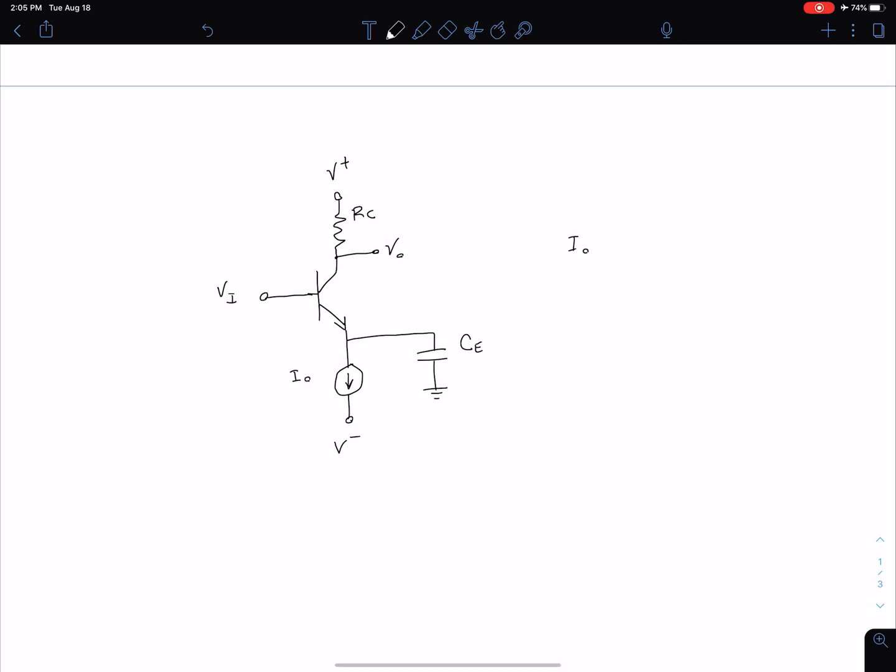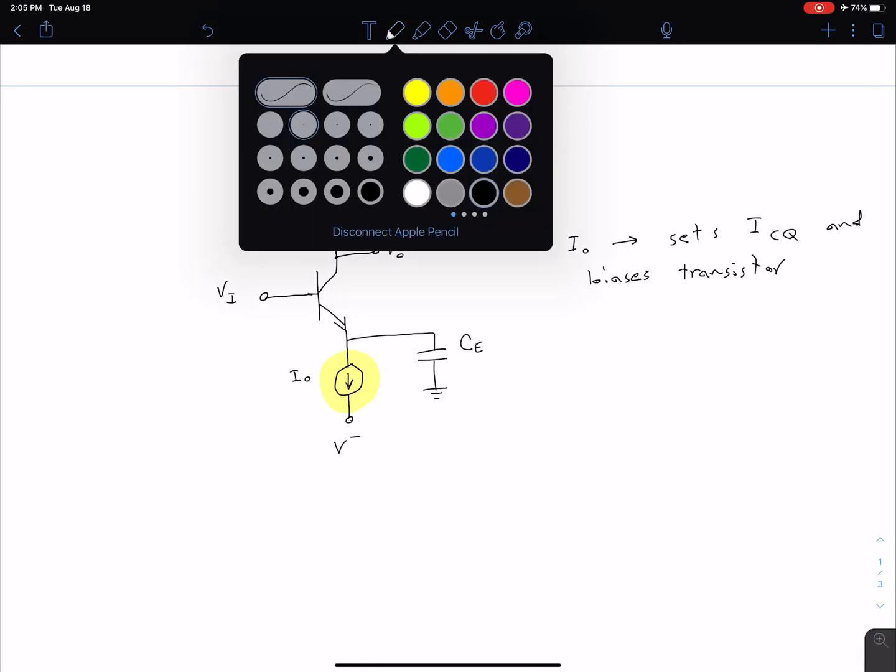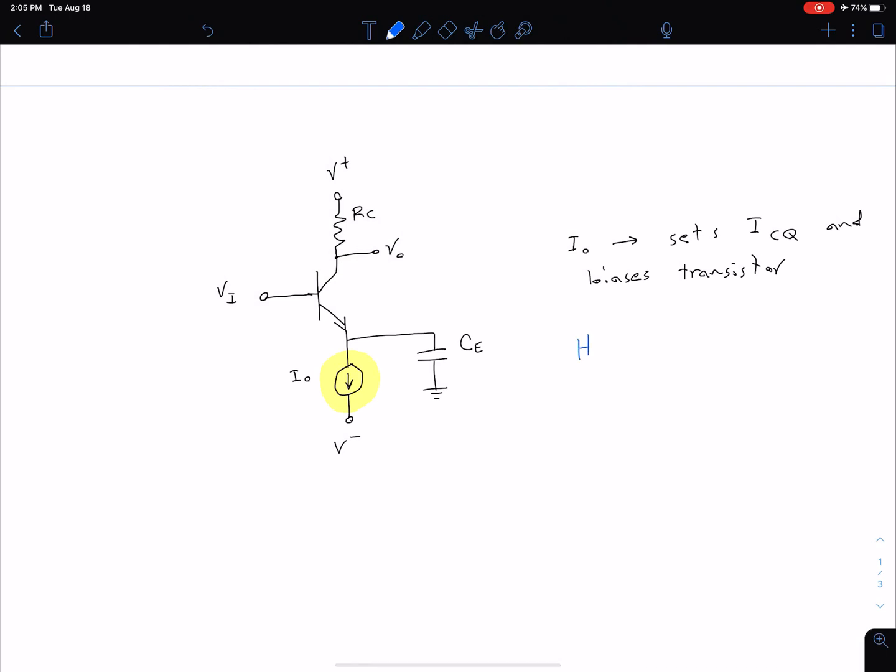If we look at this current source I0, essentially what this I0 is doing is it's setting our quiescent collector current, our ICQ. And in doing so, it's biasing the transistor. What we're going to actually look at when we talk about IC biasing is: how do we make this current source out of transistors? That's our big question going into this topic.